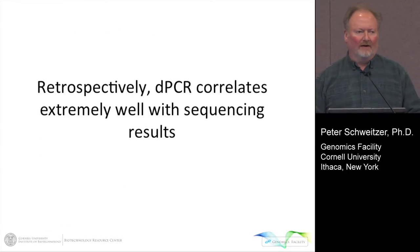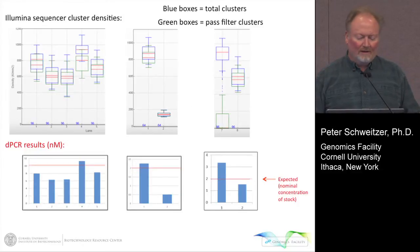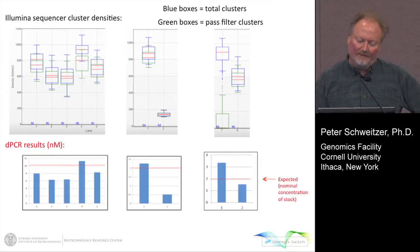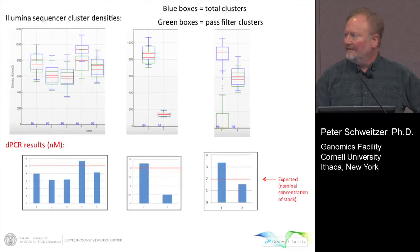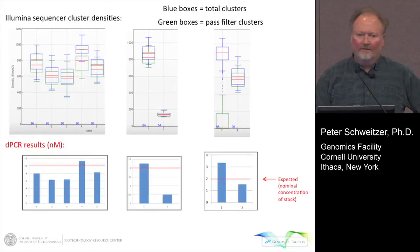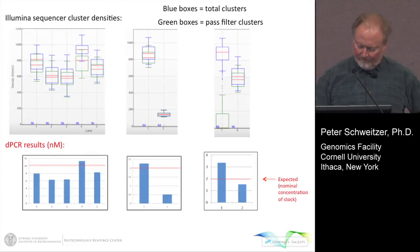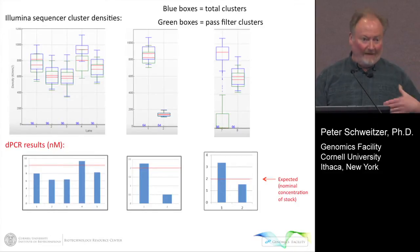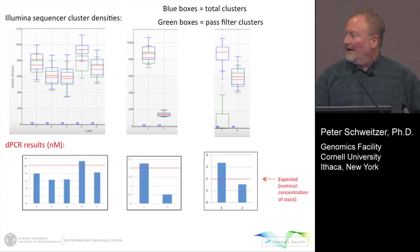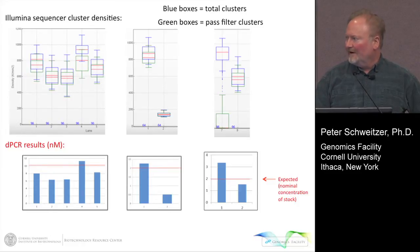We spent a lot of time retrospectively checking our libraries, convincing ourselves that this would work, and sure enough, the quantifications with digital PCR correlate extremely well with our results off the sequencers. The left panel — all five lanes are fine but some are a little bit lower, and the digital results correlate extremely well with those cluster densities on the flow cell. The red bars are what we thought each library was. The middle panel shows an under-clustered lane — testing with digital PCR after the run, that sample was quite a bit lower than we thought. Here's an example of one that was over-clustered, and sure enough it was quantified as higher than expected.